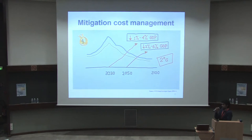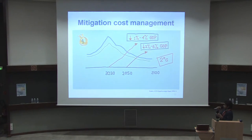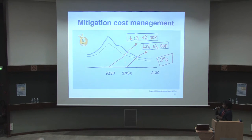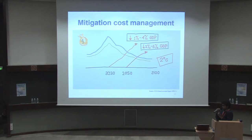Different countries have different organizational capabilities and economic levels. Who will bear this mitigation cost? Developing countries will mostly have to pay the price for it. But OECD countries, who are developed now, have the responsibility to make the world better. So they will cooperate to help those countries — committing to 100 billion US dollars per year, to be raised by 2020.